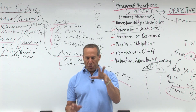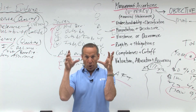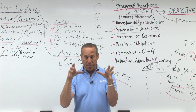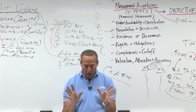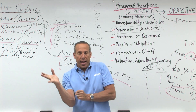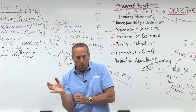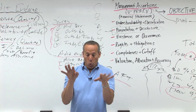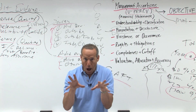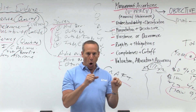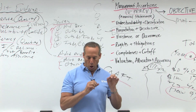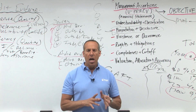So those are the things we're looking at when using it as a substantive test. But to recap: planning — required; substantive — recommended; optional; overall review — required.